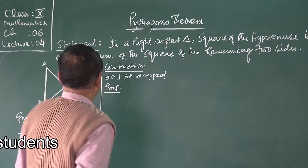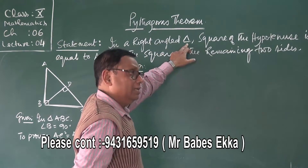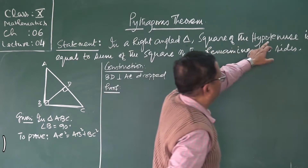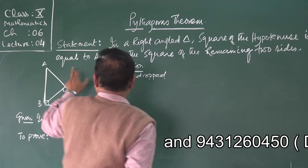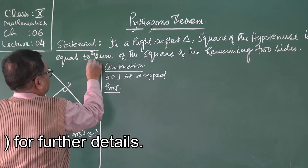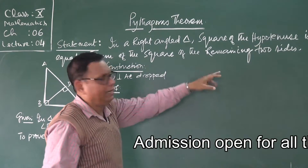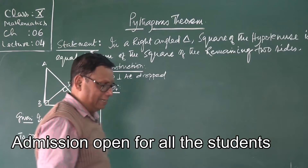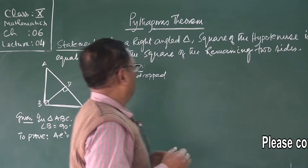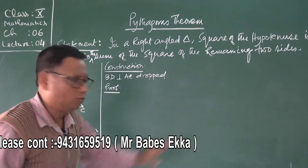The Pythagoras theorem says: in a right angle triangle — it should be a right angle triangle, only then this theorem will work — the square of the hypotenuse is equal to the sum of the squares of the remaining two sides.